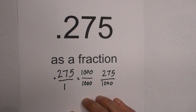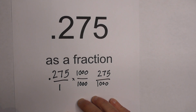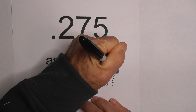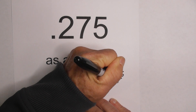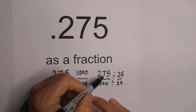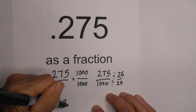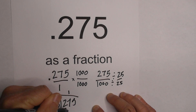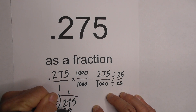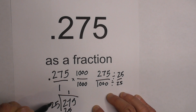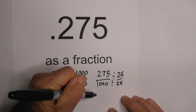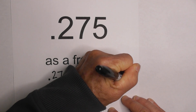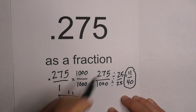So now what I need to do is go ahead and reduce this fraction, and I can do that by dividing it by 25. I'll divide the numerator and the denominator by 25. 275 divided by 25: 25 goes into 27 once, 27 minus 25 is 2, so now we have 25, and 25 goes into 25 — that gives us 11. And I know 1,000 divided by 25 is 40. So our fraction is 11 over 40.